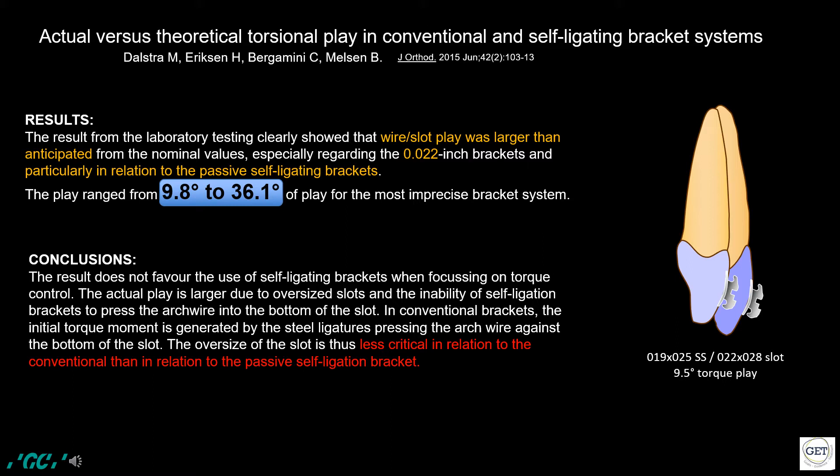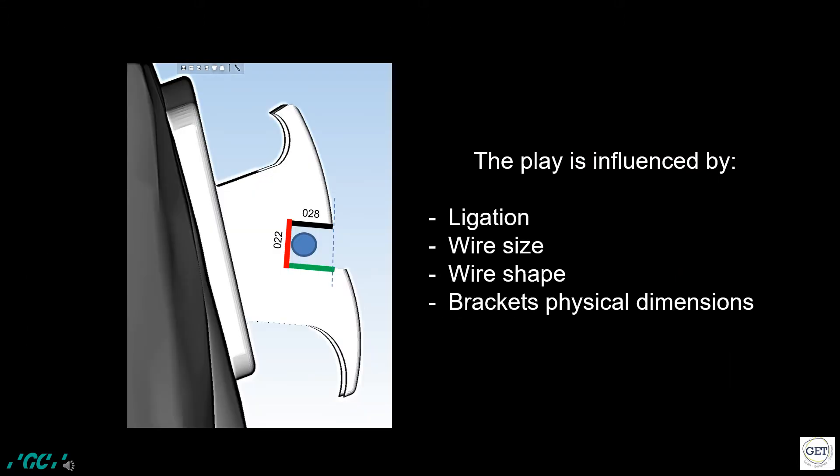Using a bidimensional approach — a 0.20 by 0.28 slot with an active self-ligating bracket — can allow better results. Not only torque is influenced: in general, accuracy, slot size, and ligation together are all important factors influencing the seating of the wire in the slot, controlling tooth position, and the treatment progress and outcome.